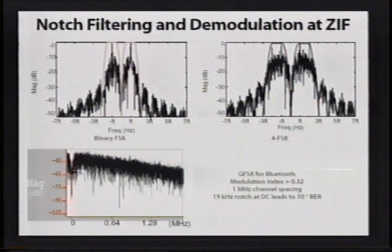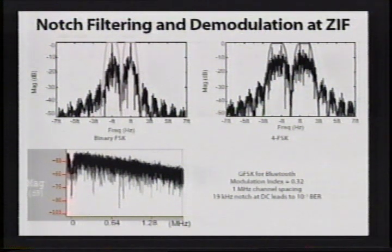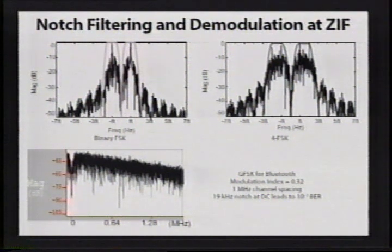However, as we go to more advanced modulation schemes such as Gaussian frequency shift keying used in Bluetooth with a very small modulation index, the spectrum peaks at the middle of the channel. After down-conversion to zero IF, the down-converted spectrum peaks at DC. It is still possible to apply DC offset nulling in this way with a notch, and although we have removed valuable signal spectrum from the peak, we can still recover the signal with an adequate bit error rate. For example, with a 19 kHz wide notch centered at DC, we can still read this signal with a 10^-3 bit error rate, which is good enough for Bluetooth.